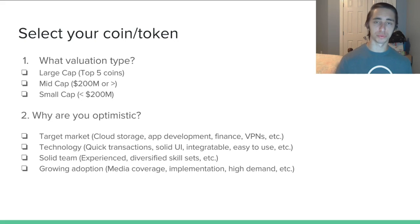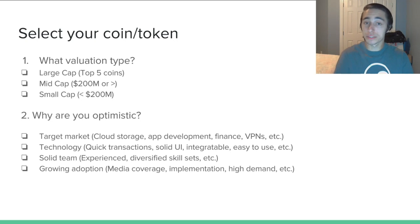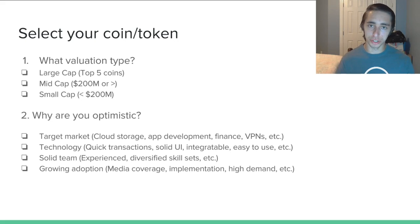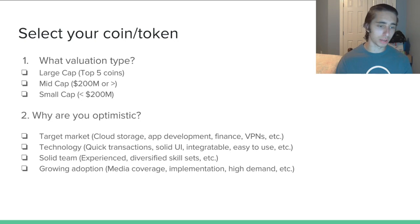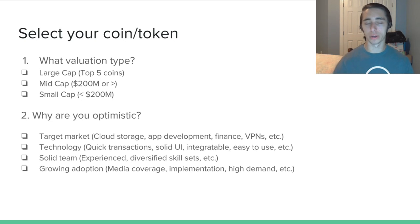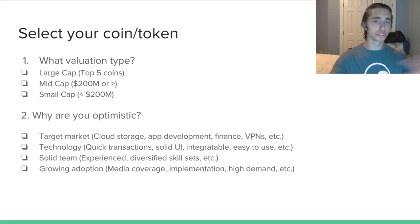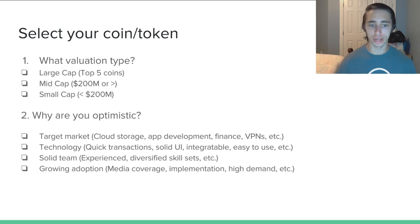Small caps are higher-risk candidates. I recommend you do not invest in any small caps under 20 million dollars in valuation, because you're really susceptible to pump-and-dumpers. For small caps, look for coins in the 50 to 200 million dollar range — early-stage coins just coming to market. Now that you've categorized your risk, you have to ask: why are you optimistic on this coin? There are four major categories to look for: target market, technology, dev team, and growing adoption.